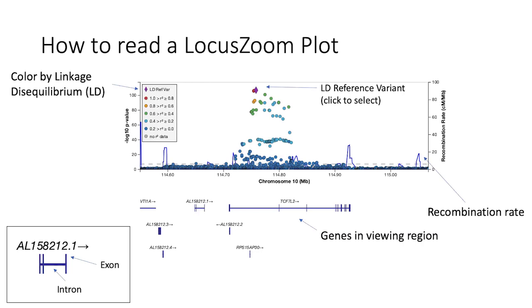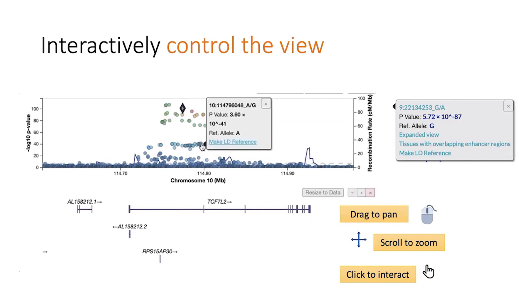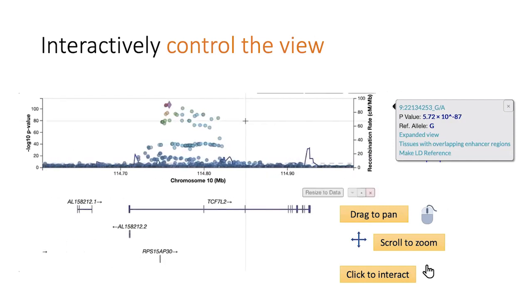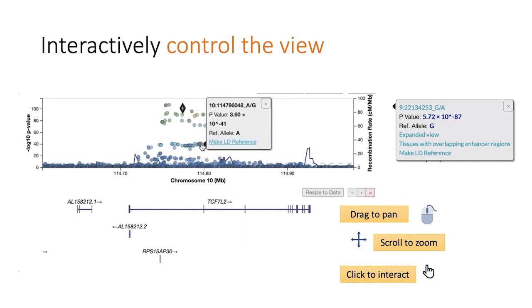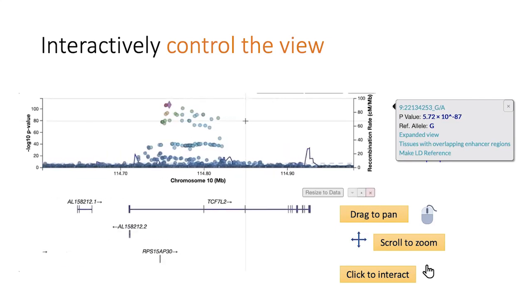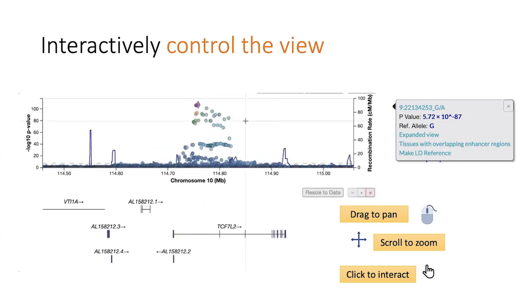Because this is a web-based tool, these region plots are interactive. You can drag to pan, scroll to zoom the region, and if you click on a point you can see tooltips with more information. These can include links to external databases or pages, as well as interactive buttons that toggle specific features, like changing the LD reference variant in order to recolor the plot appropriately.